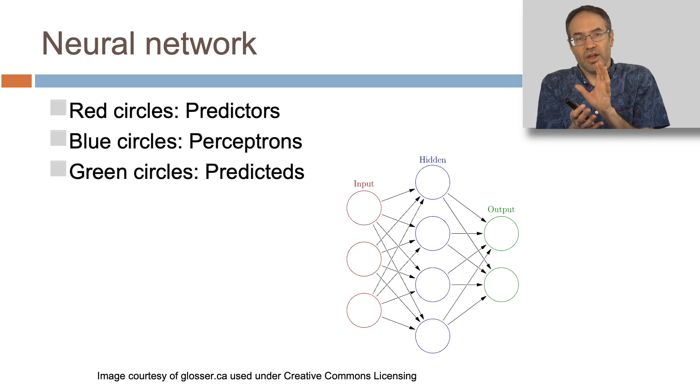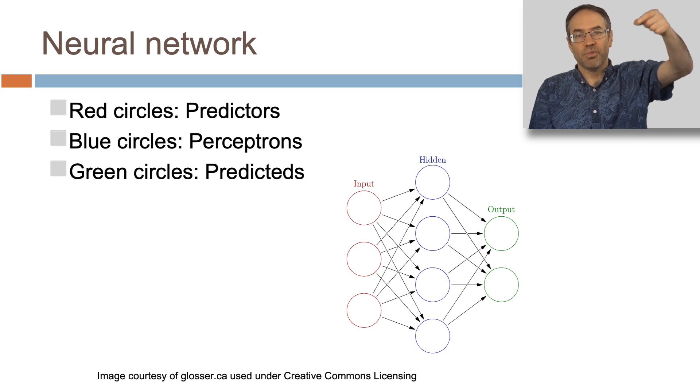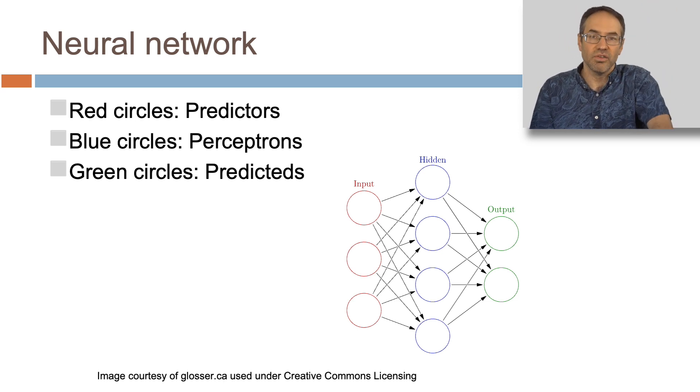In this diagram, the red circles are predictors, and those predictors point in a complex, super complex fashion—really an all-to-all fashion, but you can have weights of zero that make it no longer all-to-all. They point to perceptrons, and those are the blue circles. And those perceptrons point out to predicted variables, and you can have more than one predicted variable.